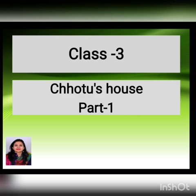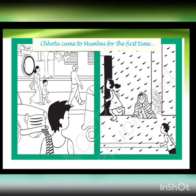This is the story of a little boy named Chotu. Chotu came to Mumbai for the first time. He had no shelter or place to stay, and then it starts raining. To protect himself from the rain, he takes shelter in a pipe.